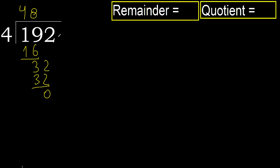There is no next digit, therefore we finish. 192 divided by 4 is 48.